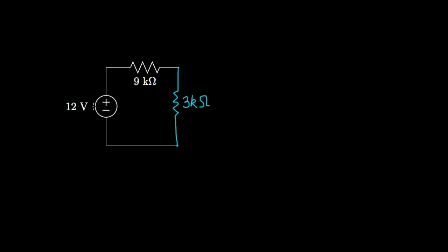At this point, we have 12 volts applied across a total resistance of 9 plus 3, or 12 kilohms. So the current flowing through this 9-kilohm resistor would be 12 volts divided by 12 kilohms, or 1 milliamp.